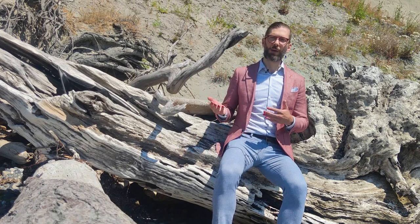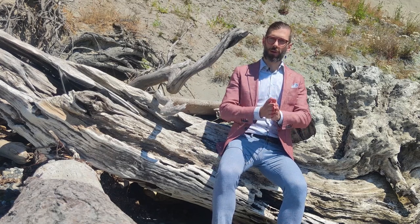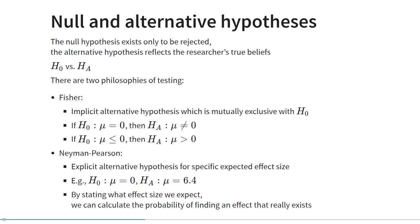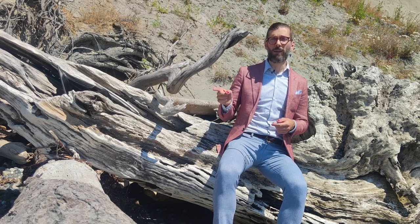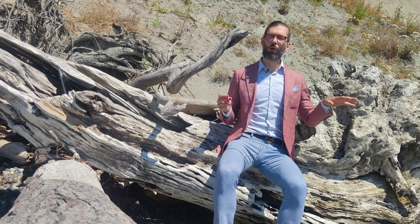A more modern approach was introduced by Neyman and Pearson. They specified explicit alternative hypotheses. For example, if the null hypothesis is that the mean equals zero, one alternative hypothesis could be that the mean equals 6.4. By specifying a specific expected effect size for the alternative hypothesis, we can calculate the probability that we would be able to find that effect with a sample of a given size.